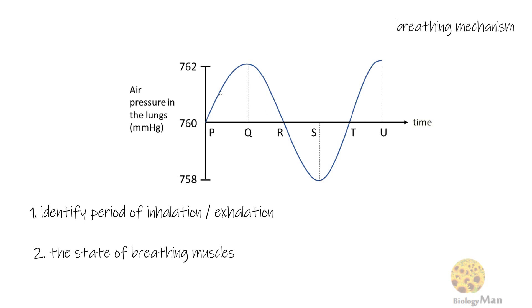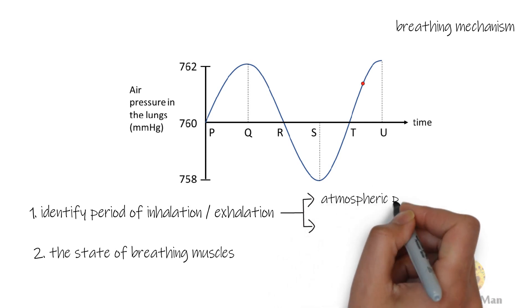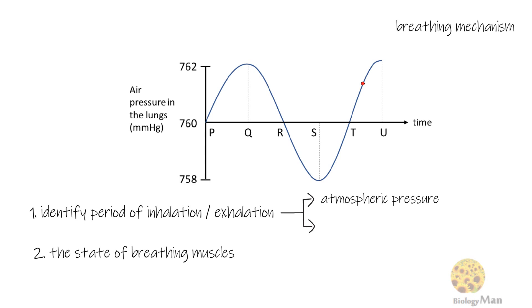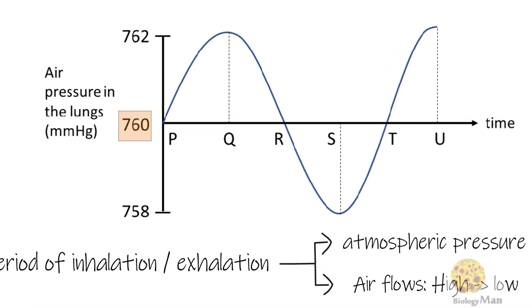When we breathe, the lung pressure will change according to the volume change of the thoracic cavity. In order to identify the period of inhalation and exhalation, you must understand two things. First, the atmospheric pressure is 760 mmHg. Second, air flows from high pressure region to low pressure region.